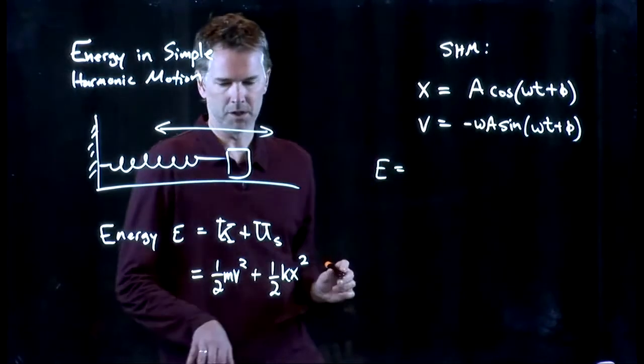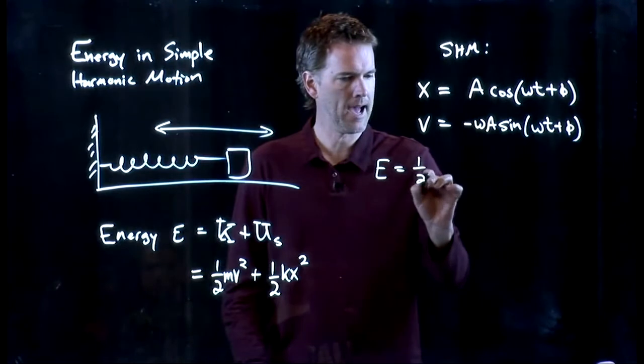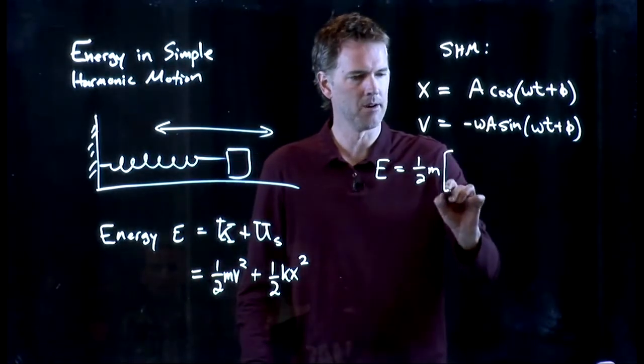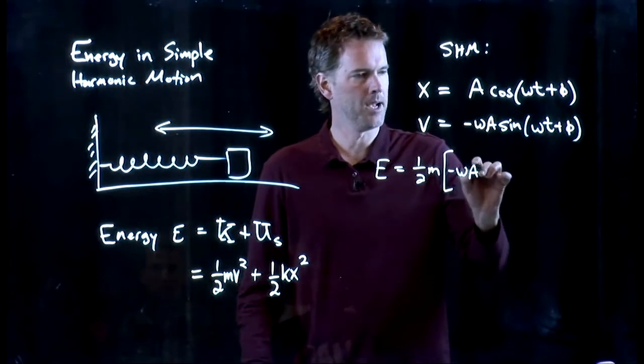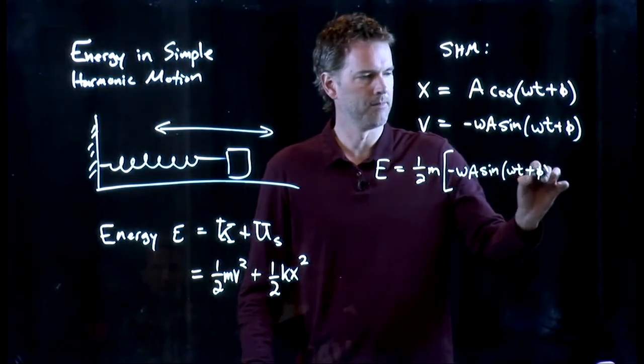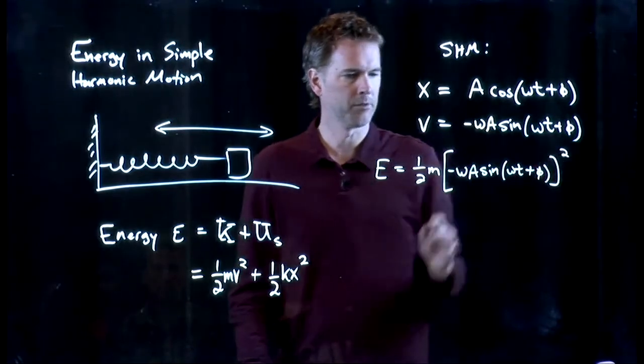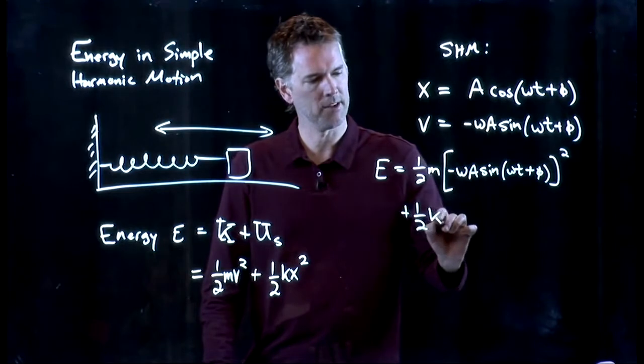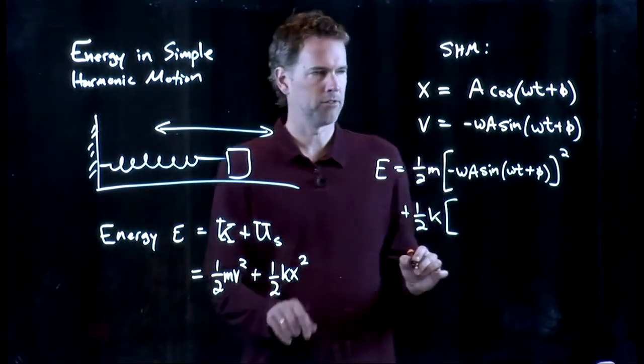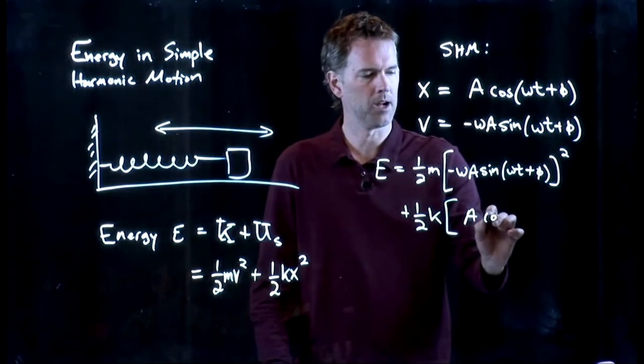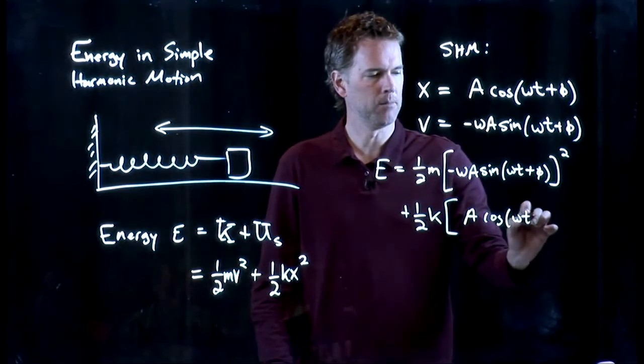So what does energy become? One-half m times v squared. Here's my v right here: negative omega A sine of omega t plus φ. We're going to square that. And then we're going to add one-half k times x squared. But there's my x: A cosine omega t plus φ.